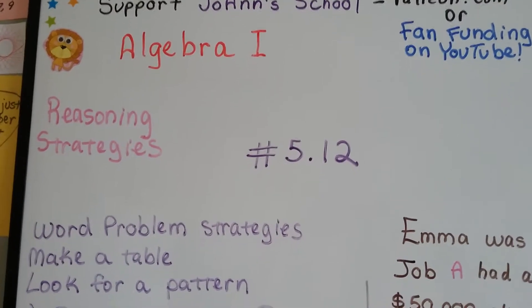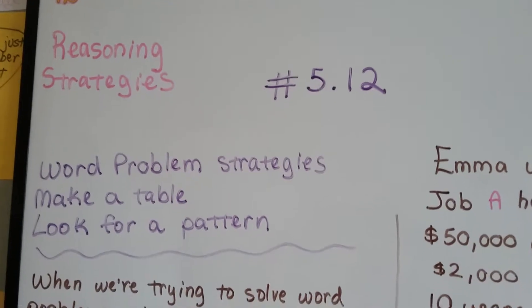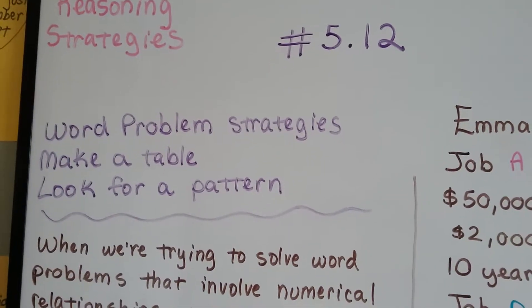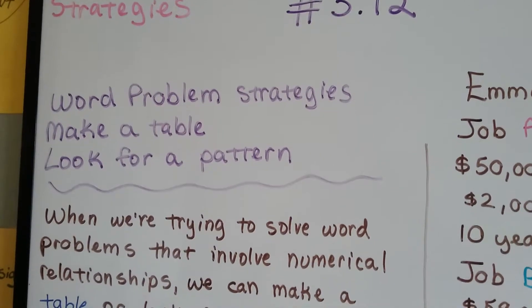Algebra 1 number 5.12. These are reasoning strategies, and we're going to talk about word problem strategies of making a table and looking for a pattern.